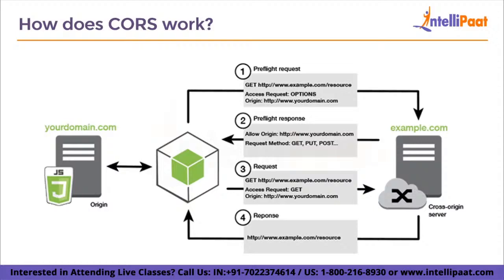The access-control-allow-origin header is defined in the second domain's server configuration. If the header doesn't contain wildcards and the first domain isn't explicitly included, the browser displays an error message. So both the first domain and the second domain should be configured properly for them to share resources.